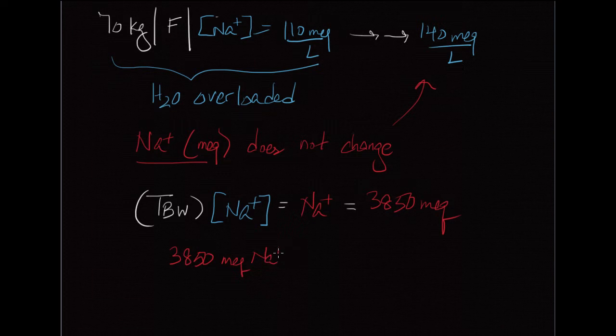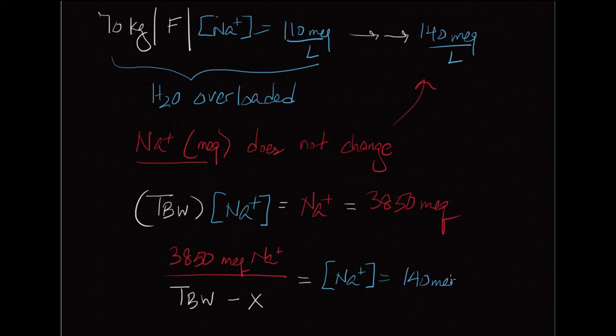Except this time, she's going to have to lose some amount of water in order to get to 140. So all we do is divide by the total body water minus that amount that we want her to lose to get the concentration of sodium, which we have stipulated to be 140. And so if you do all this math, you're going to get a value for x. And x turns out to be about 7.5 liters.